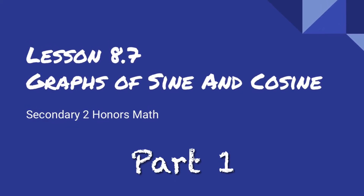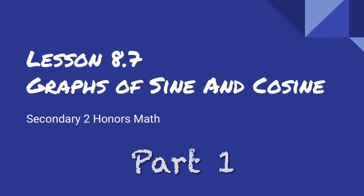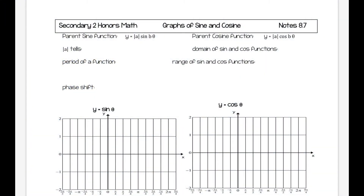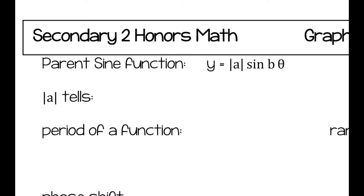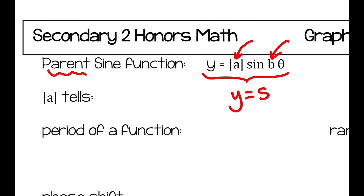This video is the first part of Lesson 8.7, Graphs of Sine and Cosine. We are going to be talking a lot about what's called the parent sine function. Our parent sine function is going to be y equals a sine b-theta. We'll talk about what a and b mean, but if you just see y equals sine theta, that means there's a 1 for both a and b. That's the parent function, and it will change according to what a and b are.